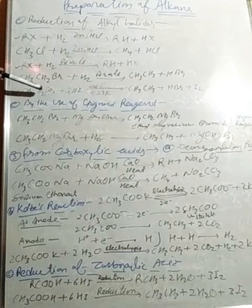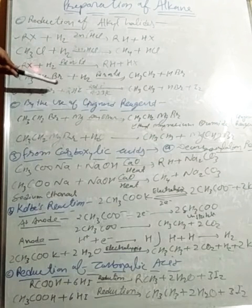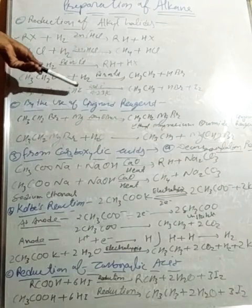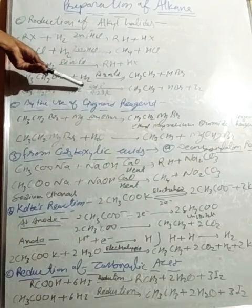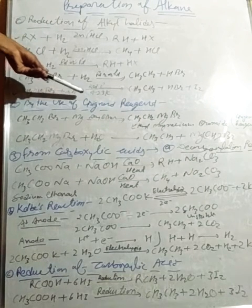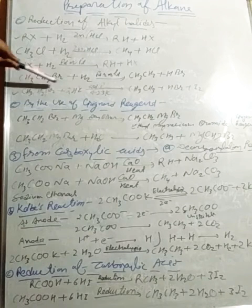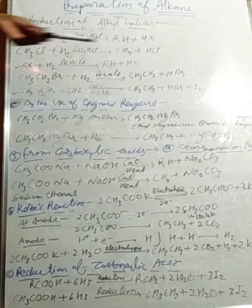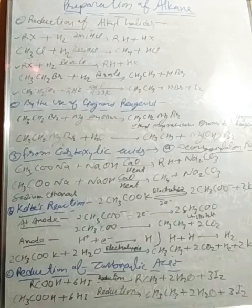When CH₃CH₂Br, bromoethane, reacts with hydrogen, catalyzed by red phosphorus at temperature 423 Kelvin, it forms alkane — ethane — plus HBr. Iodine can also be used similarly.